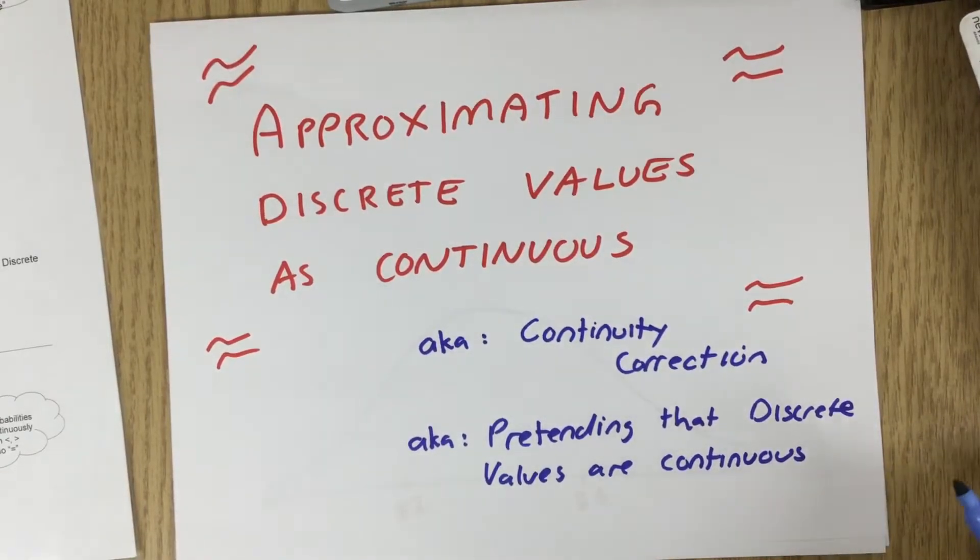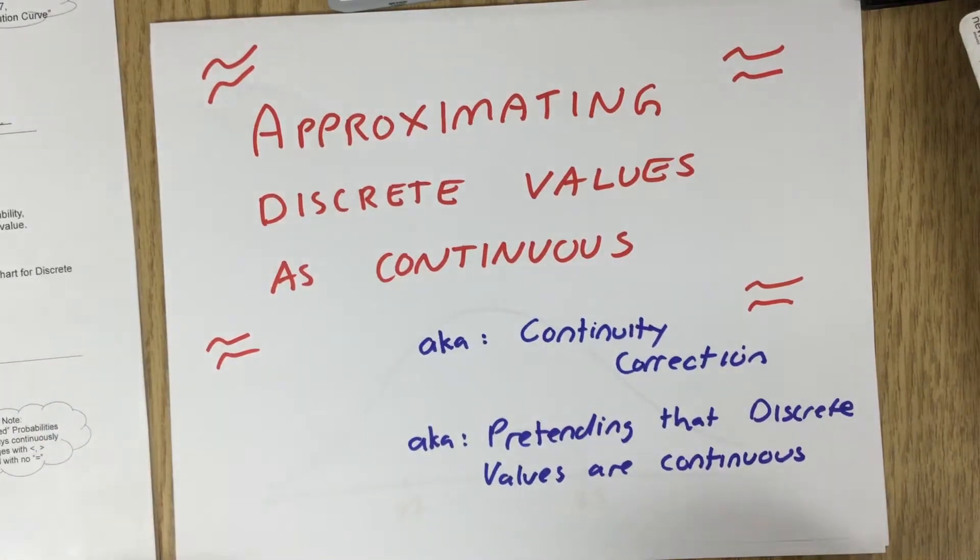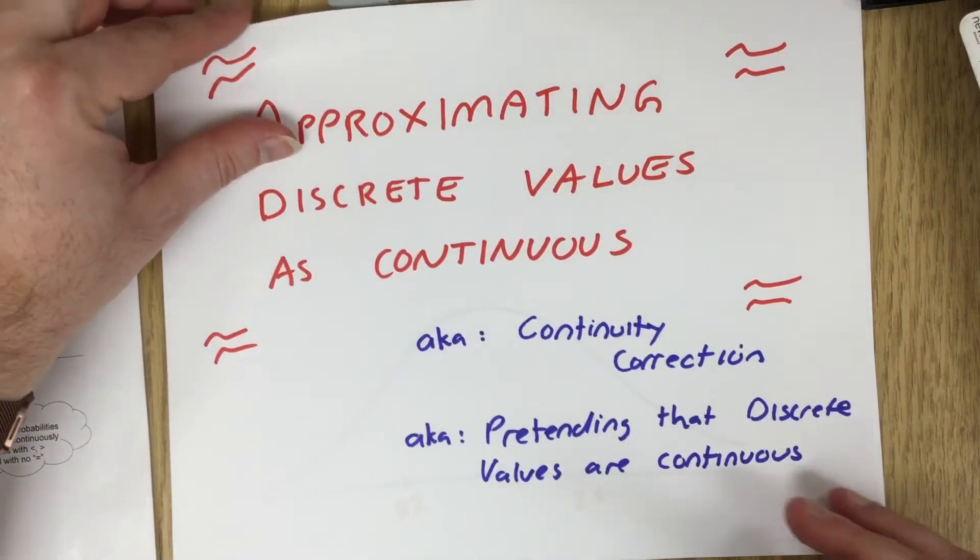We're now going to be discussing approximating discrete values as continuous. This is sometimes known as a continuity correction. Essentially what we're going to be doing is pretending that discrete values are continuous. This might be useful if you want to use the techniques that we are learning for continuous variables and apply them to discrete variables.